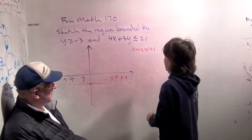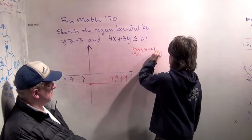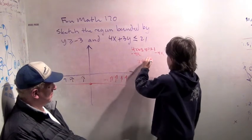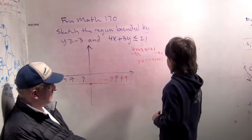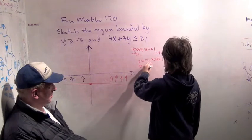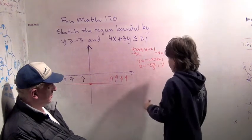Yep. And we should get the 4x on this side so we can get 3y equals -4x plus 21. And then this means y equals -4x over 3 plus 7. Awesome.